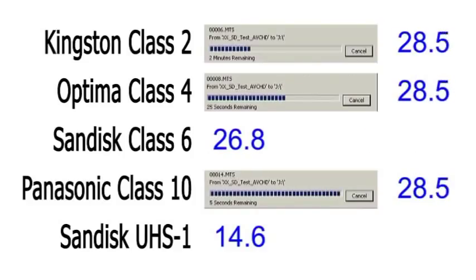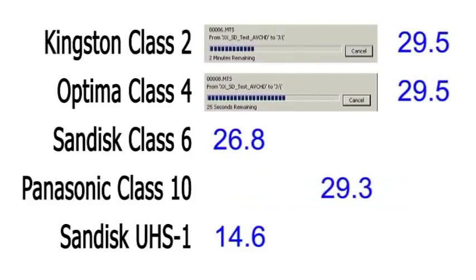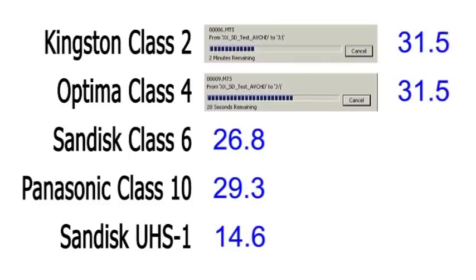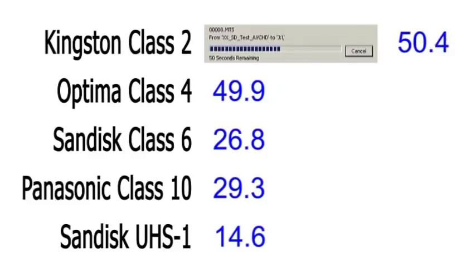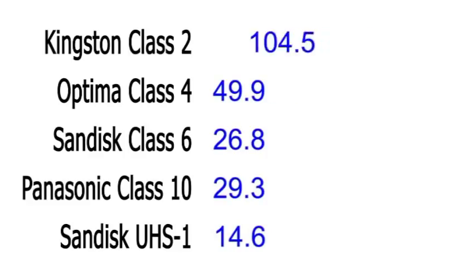That beats the theoretically faster Class 10 Panasonic at 29 seconds, proving perhaps why so many people buy SanDisk. The Class 4 Optima then takes about 50 seconds to copy half a GB, which is still not bad and far faster than the Class 2 Kingston.